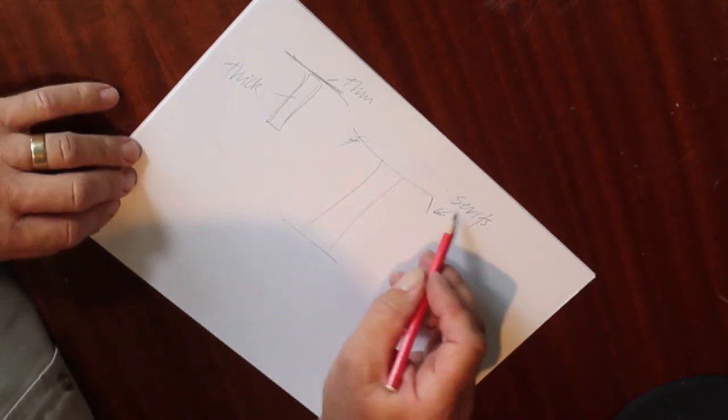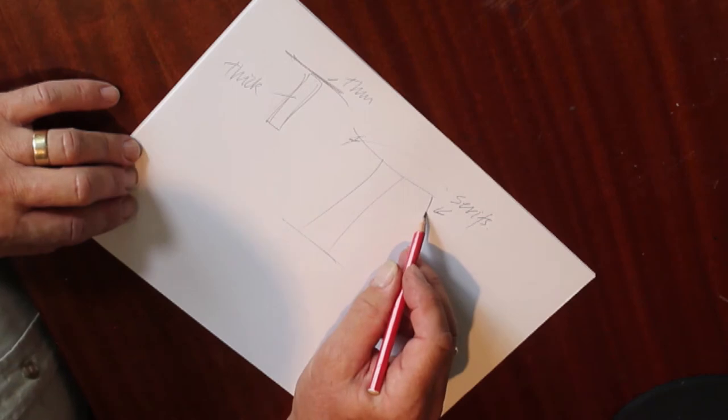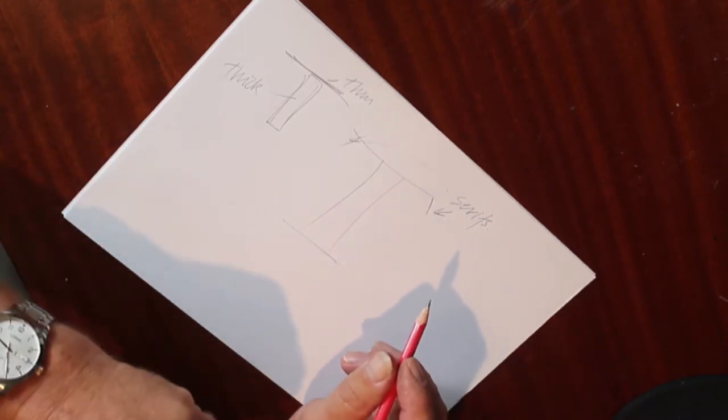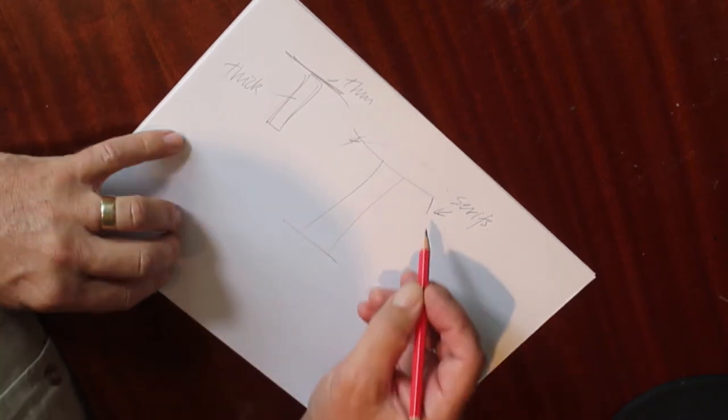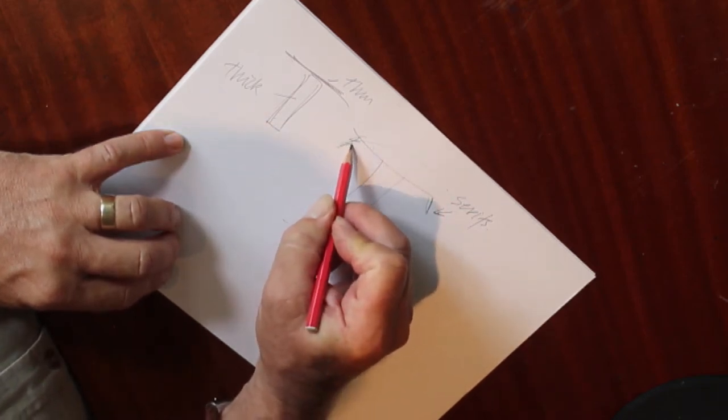The serifs are the bits here and they would be the ones where the original Roman masons would cut into the letter to start it off and therefore get this beautiful sort of shape here.